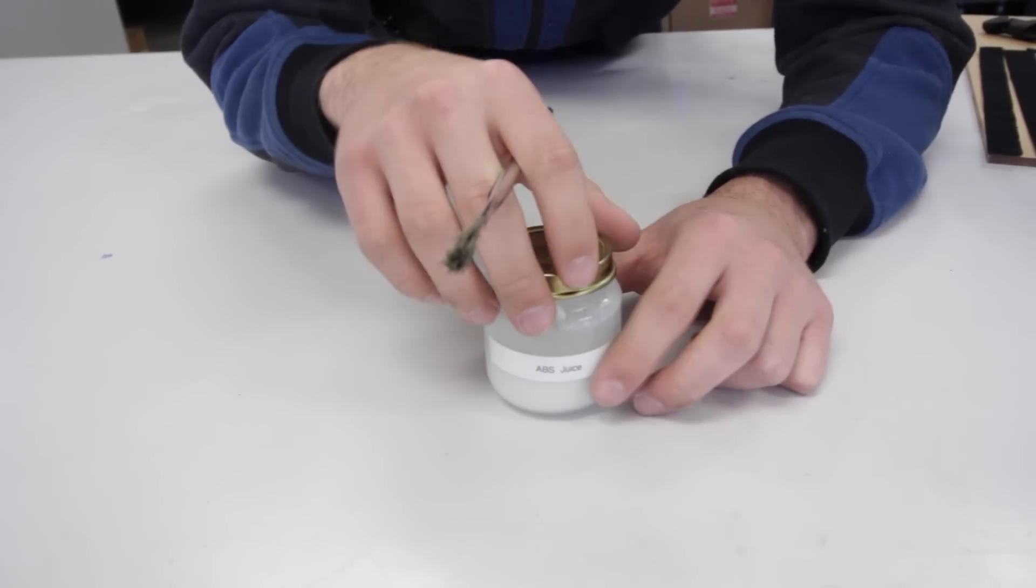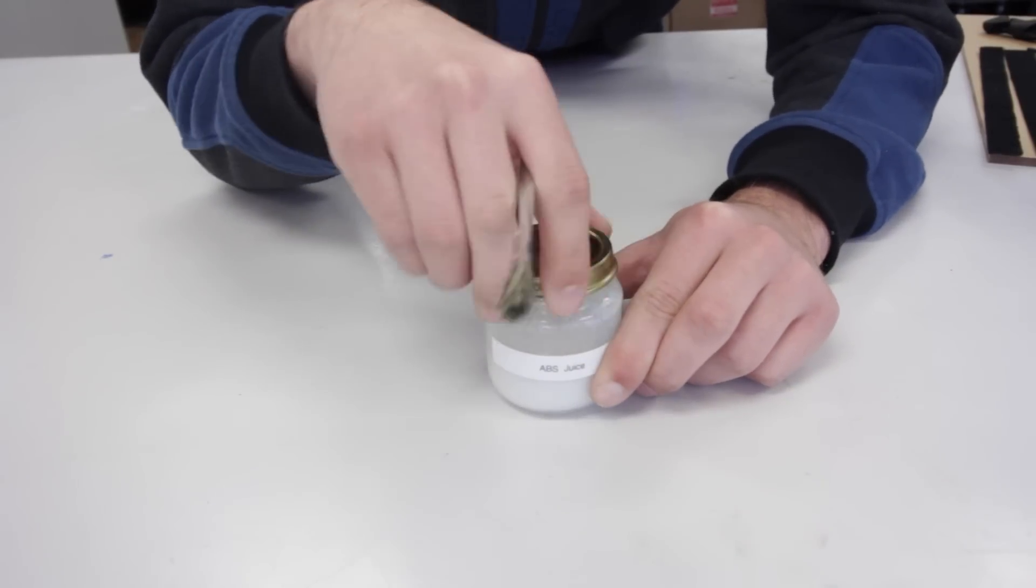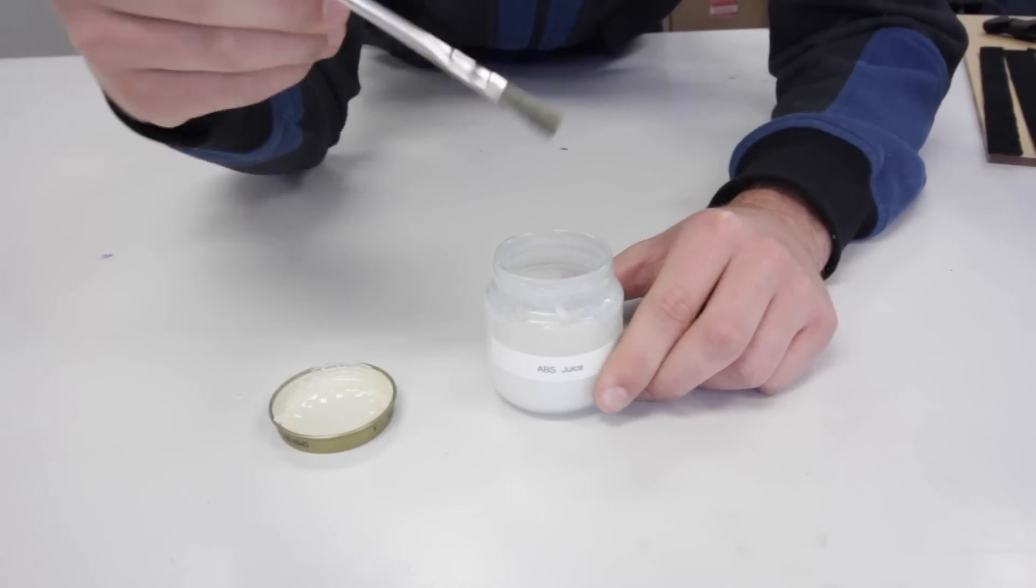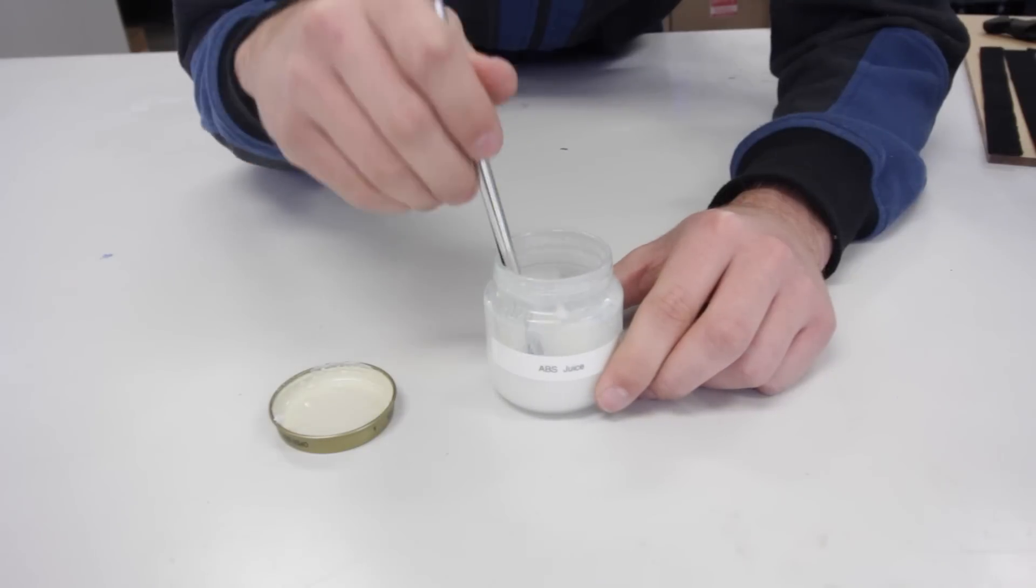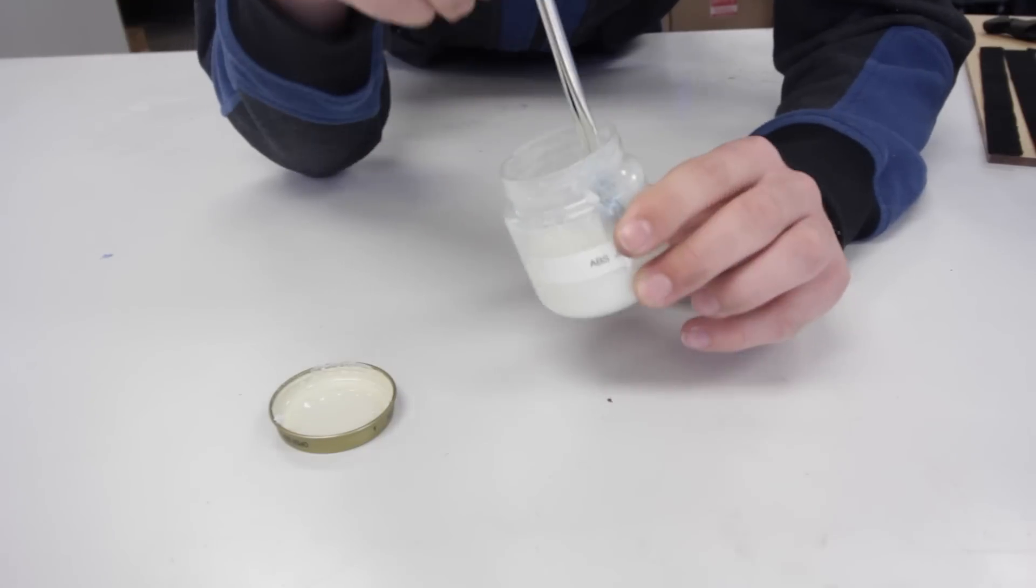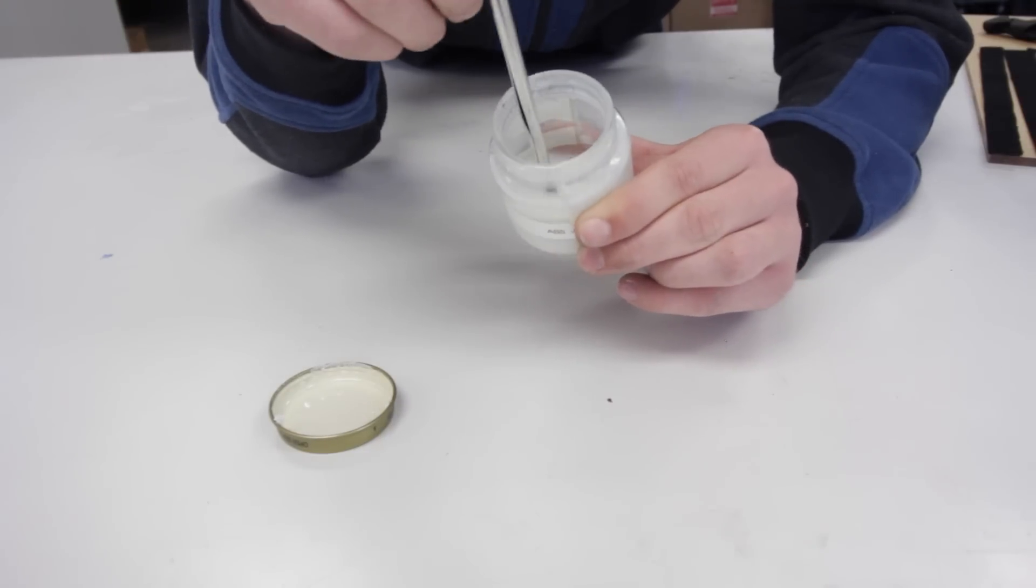You'll know that your mixture came out right depending on its consistency. ABS juice is used to adhere ABS prints to your bed. ABS juice should have a consistency similar to milk.